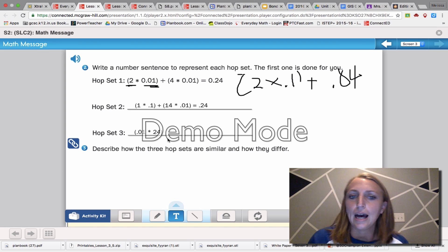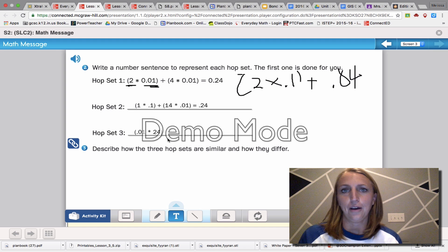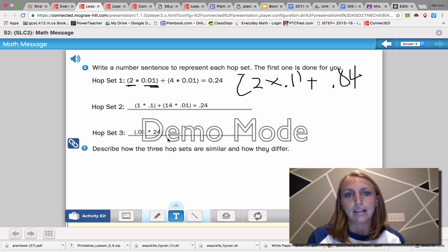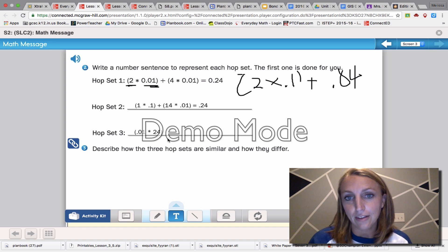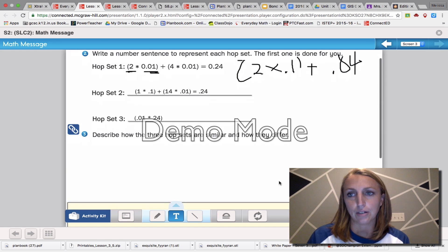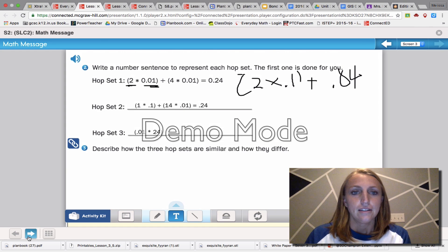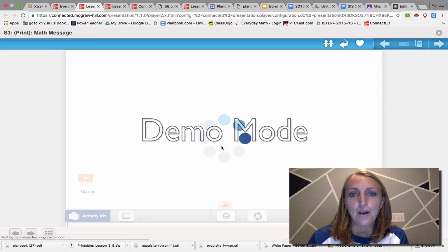Describe how the three hop sets are similar, and how they differ. Well, I'm not going to take a long time to go through that, but I think it's obvious that every hop set makes jumps, they're all in a positive direction, they all are going by one unit, so one one hundredth or one tenth. And obviously they just mix and match the different ones of how far they go at a time. Let's move on.